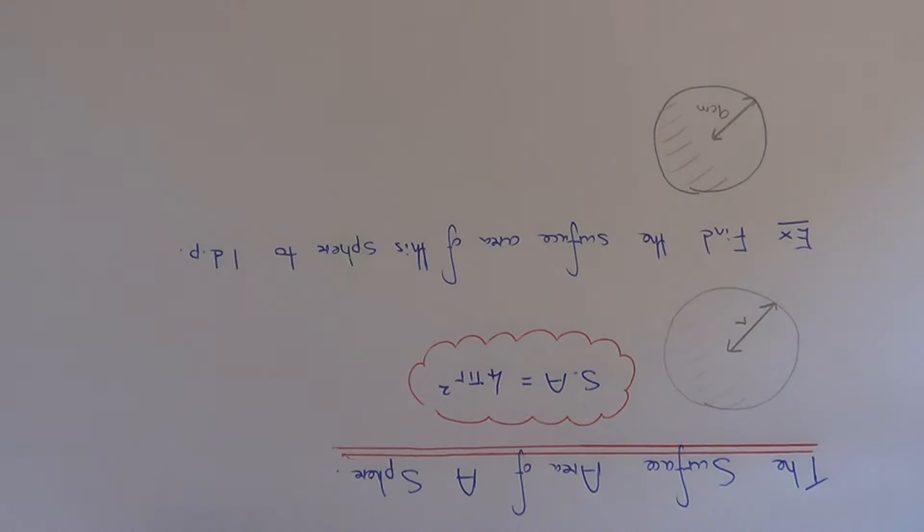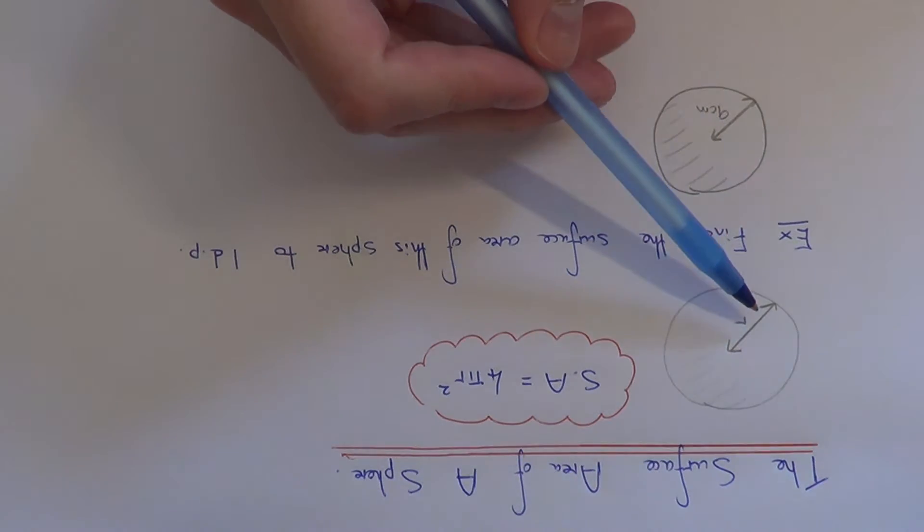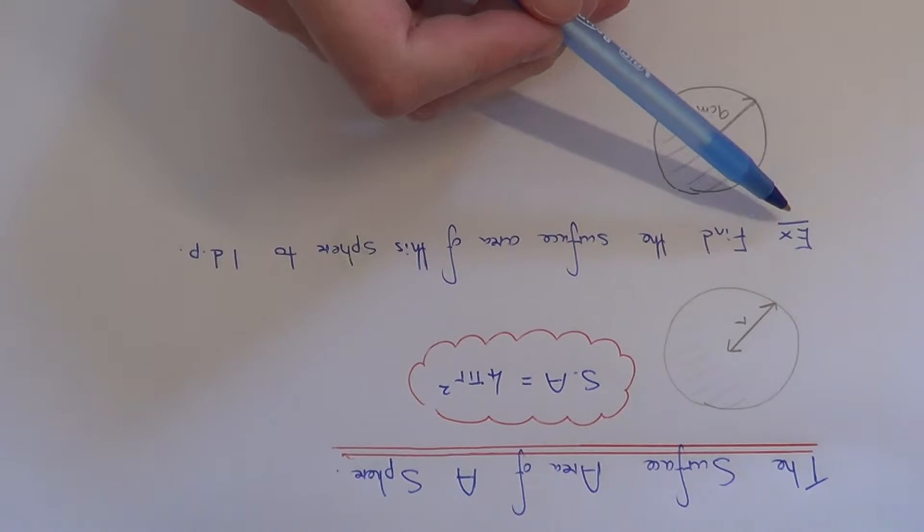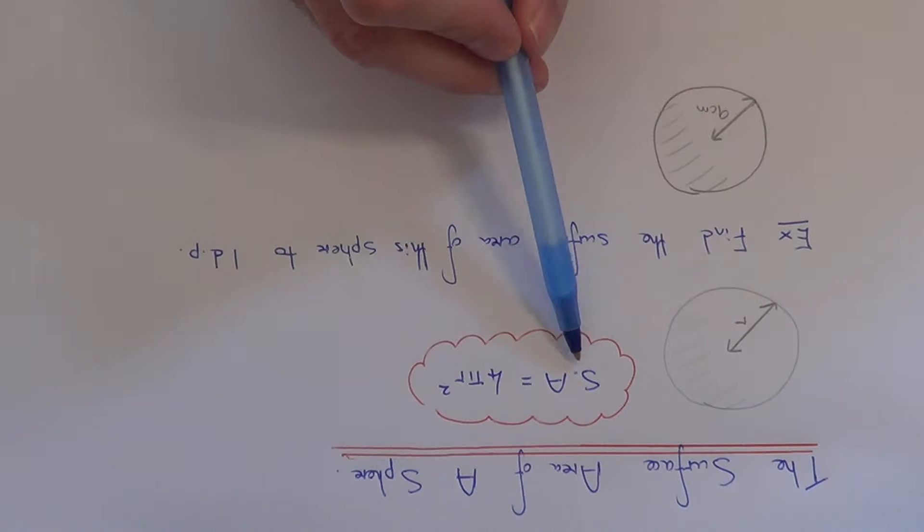Hi, today I'm going to show you how to work out the surface area of a sphere. To work out the surface area, all we need to know is the radius of the sphere. And to work it out, we just need to use the formula 4 pi r squared.